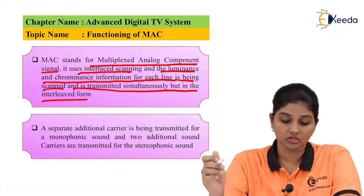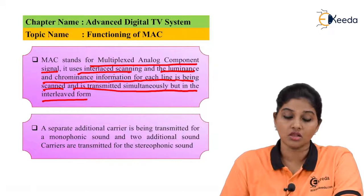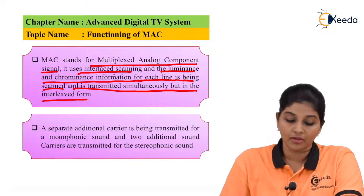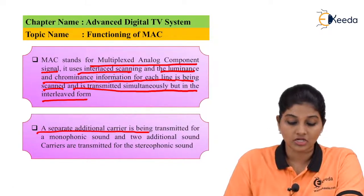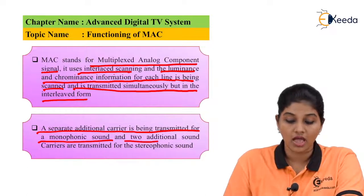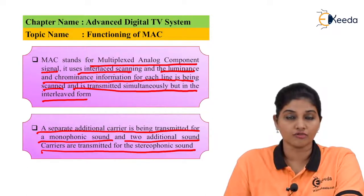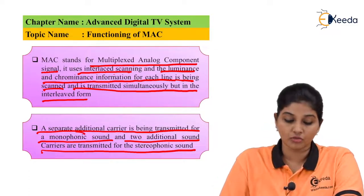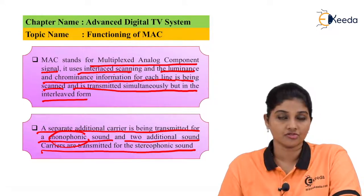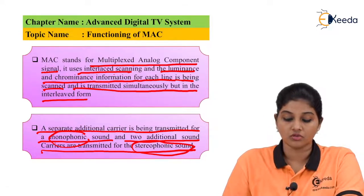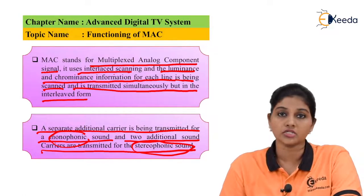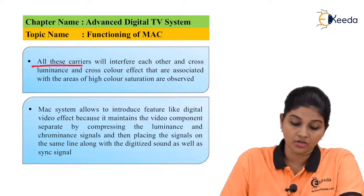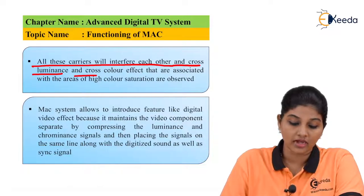In MAC, the luminance and chrominance information is not transmitted simultaneously but in interleaved form. A separate additional carrier is transmitted for monophonic sound, and two additional sound carriers are transmitted for stereophonic sound. So one single carrier is transmitted for mono sound, and two additional carriers are required for stereophonic sound.